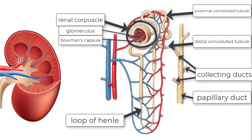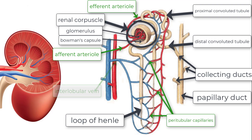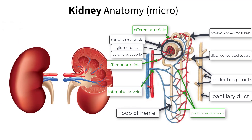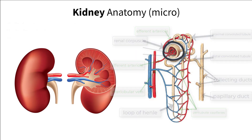Other important additional structures include the afferent arterial, efferent arterial, paratubular capillaries, and the interlobular vein. How do all of these pieces function together to make the system work? I'm so glad you asked.